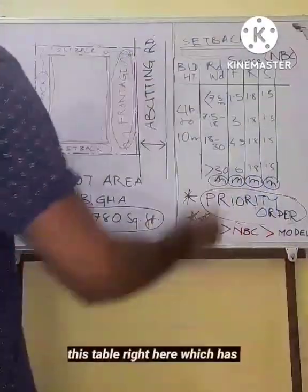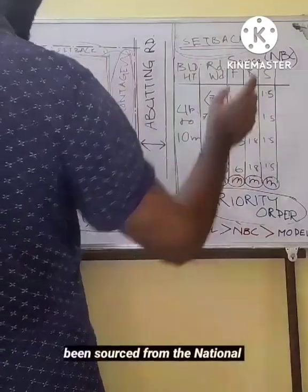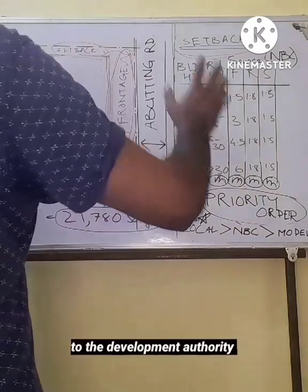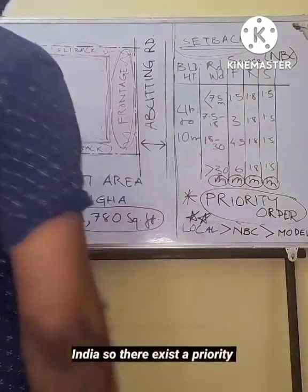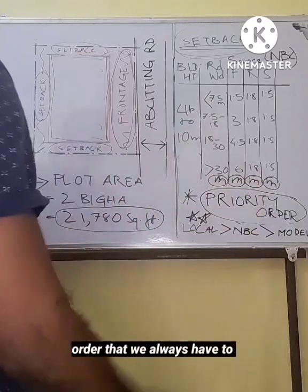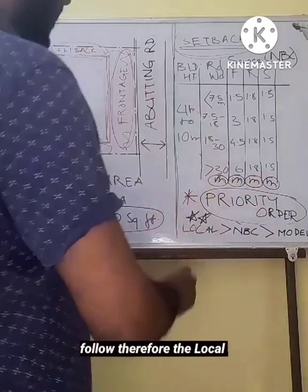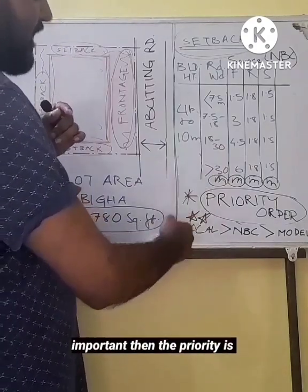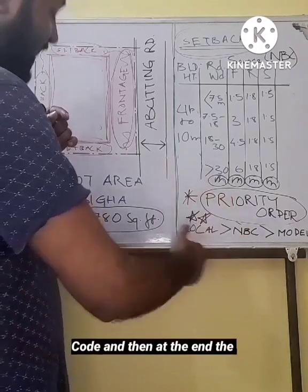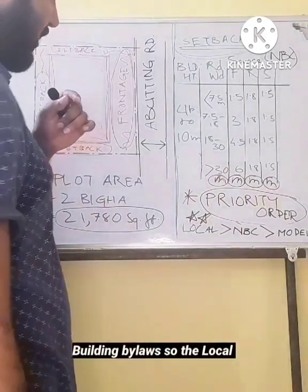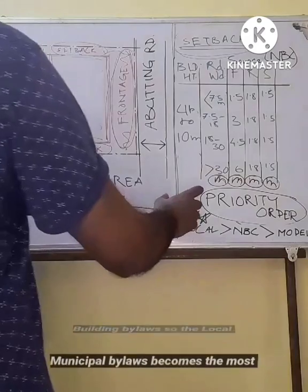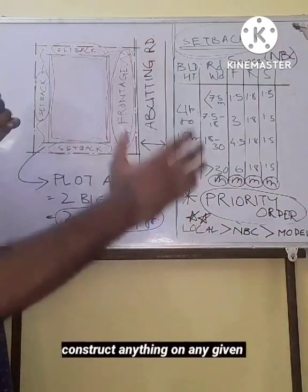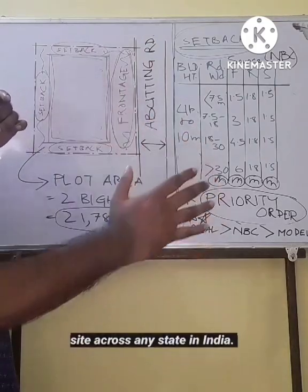This table sourced from the National Building Code varies according to the Development Authority presiding over any given state in India. So there exists a priority order that we always have to follow. The local municipal bylaws are the most important, then priority is given to the National Building Code, and then to the Model Building Bylaws. So local municipal bylaws become the most important whenever we construct anything on any given site across any state in India.